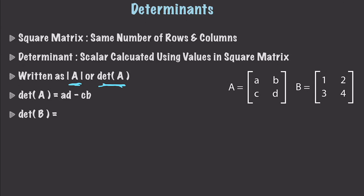If you are going to find the determinant, what you're going to do is take the A and the D value and multiply those together. Then you're going to get the C and the B value, multiply those together, and subtract to find the difference. And that is your determinant.